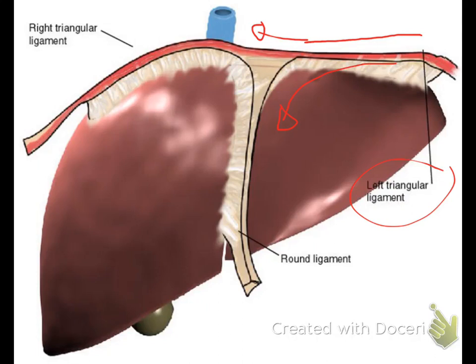These posterior and anterior divisions allow the left lateral border of the inferior vena cava to be exposed — meaning it is not covered with anything. The left lateral wall of the inferior vena cava is exposed because of the division of the left triangular ligament into its anterior and posterior divisions.